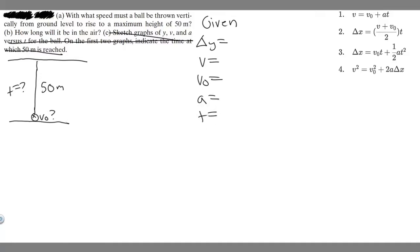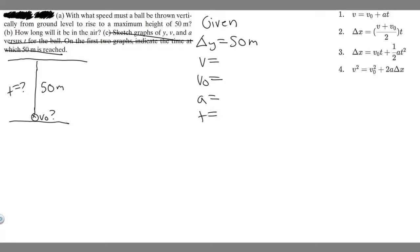So let's determine whether or not we have these. Delta y is our change in y — we do know it; it's the distance. The change in y is going to be 50 meters because it's going to go up 50 meters. What about v? We do know this one — it's not told to us explicitly, but it's implied. We know it's reaching a maximum height of 50 meters, and at its maximum height, the final velocity is equal to 0, because once something reaches its maximum height, its velocity is 0 meters per second.